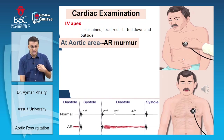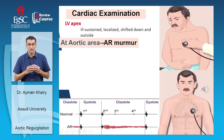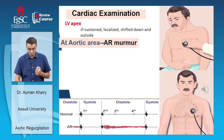The murmur of aortic regurgitation is a decrescendo diastolic murmur, starting with the second heart sound, heard as 'lub-dub-taah, lub-dub-taah.' It is best heard at the left sternal border between the third and fourth intercostal space. If the regurgitation is due to a dilated aortic root, the murmur is heard at the right upper sternal border.